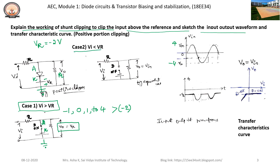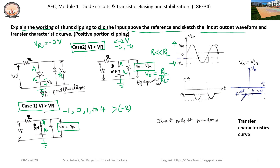Consider the second case when the input voltage is less than the reference voltage of minus 2 volts — that is, minus 3 volts and minus 4 volts. In such cases, the anode terminal will be at a lower potential compared to the cathode terminal. Hence, the diode becomes reverse biased and acts as an off switch, and the output voltage will be exactly equal to the input voltage, when resistance R is very much lesser than RL. Otherwise, V-output equals RL divided by (RL plus R) into V-input.